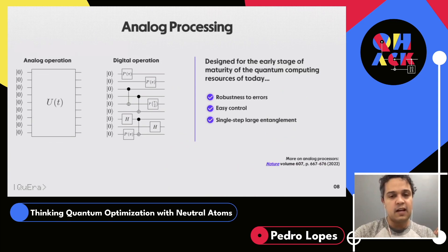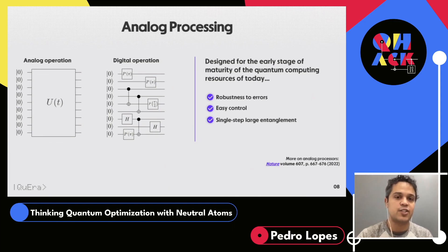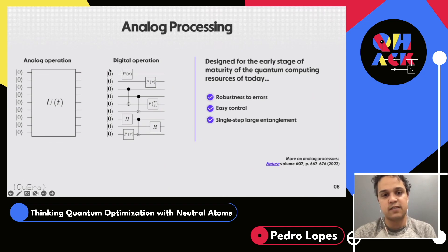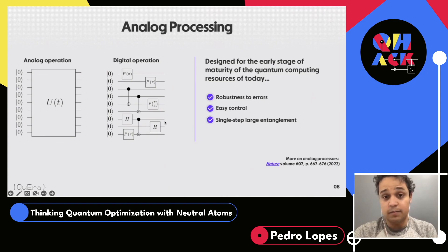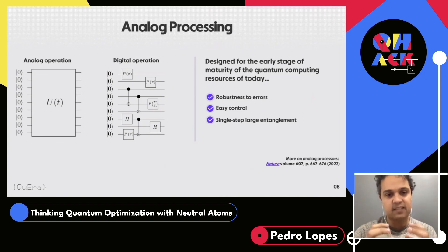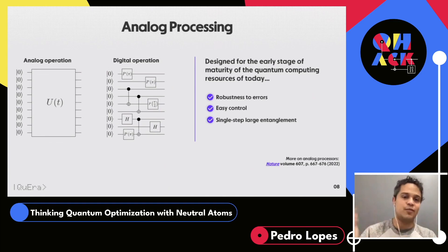Most of what you hear about quantum computing, as of last year — and things are changing — is about what we call digital operation modes, or gate-based quantum computing. You have initialized qubits and operate on them via individual or two-qubit gates to perform operations. What people developing hardware are doing is creating gates that are in some sense universal — collecting the smallest set of different gates necessary to cover all possible calculations, or all of Hilbert space.